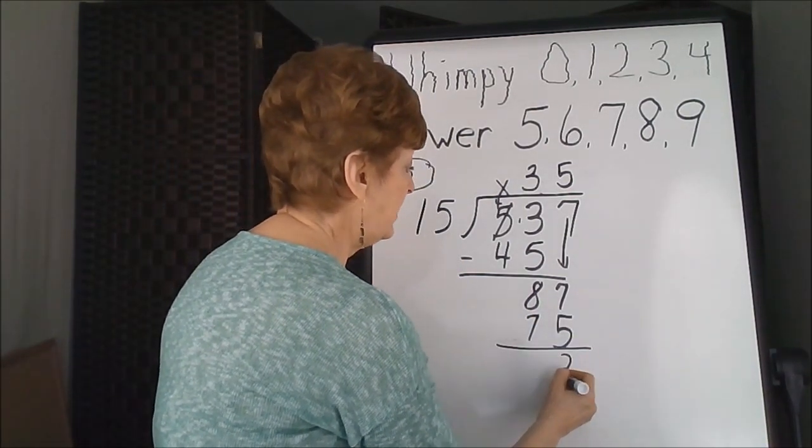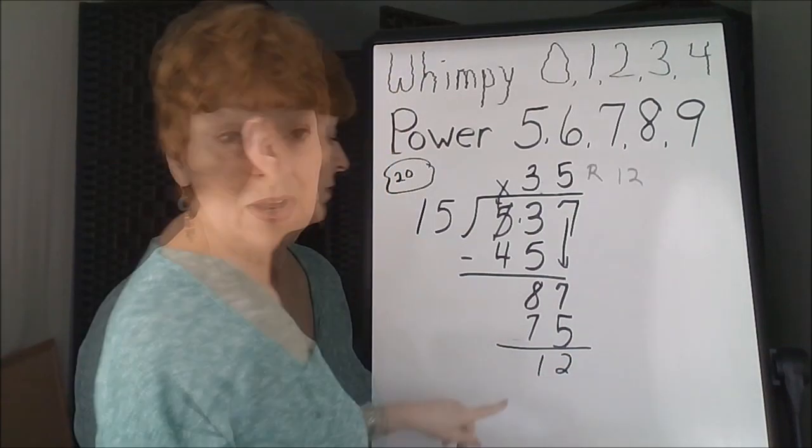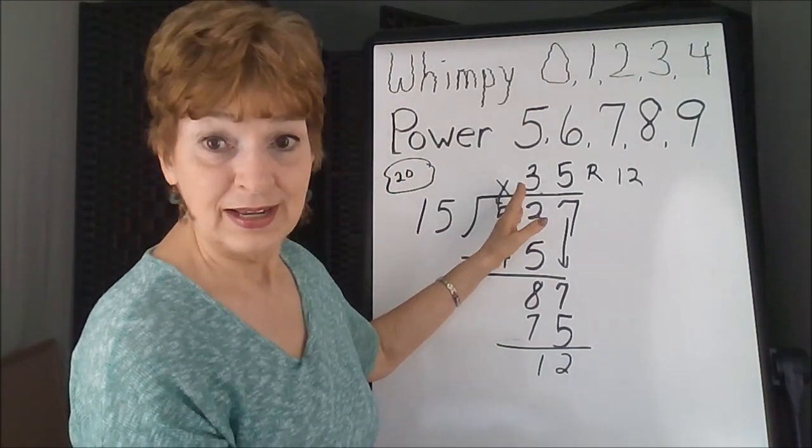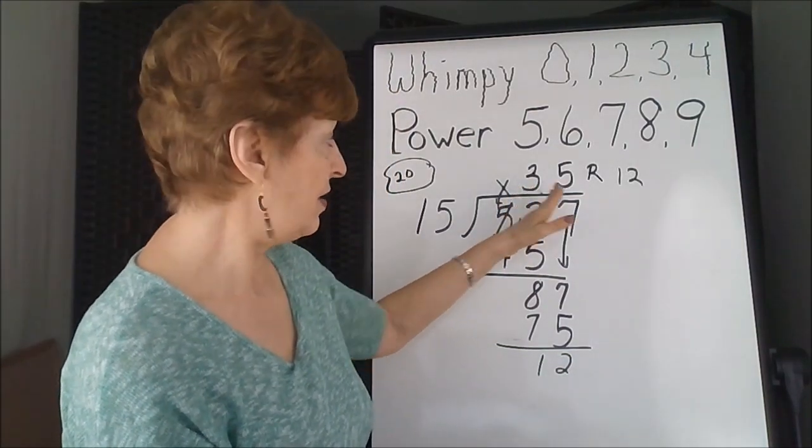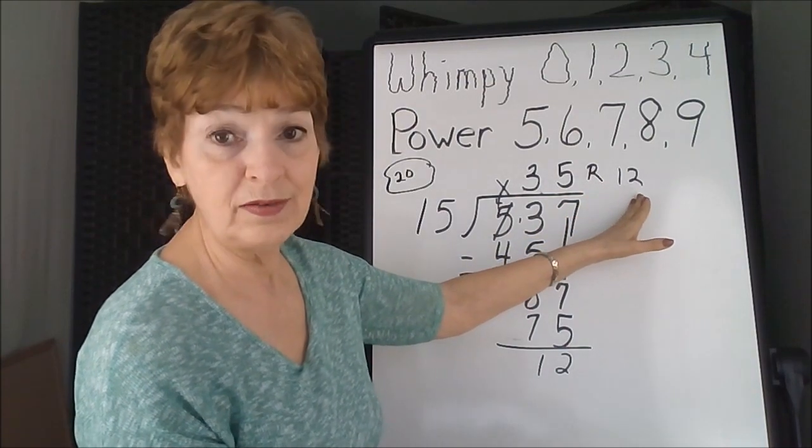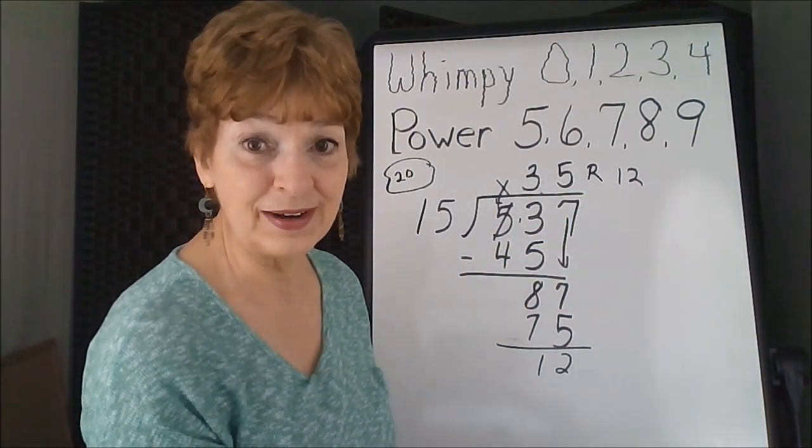When you subtract this time, we're going to get 12. The answer to this problem is 35, remainder 12. We had to make two adjustments on that one, because the numbers were just close enough to each other to be disturbed when we did the multiplication.